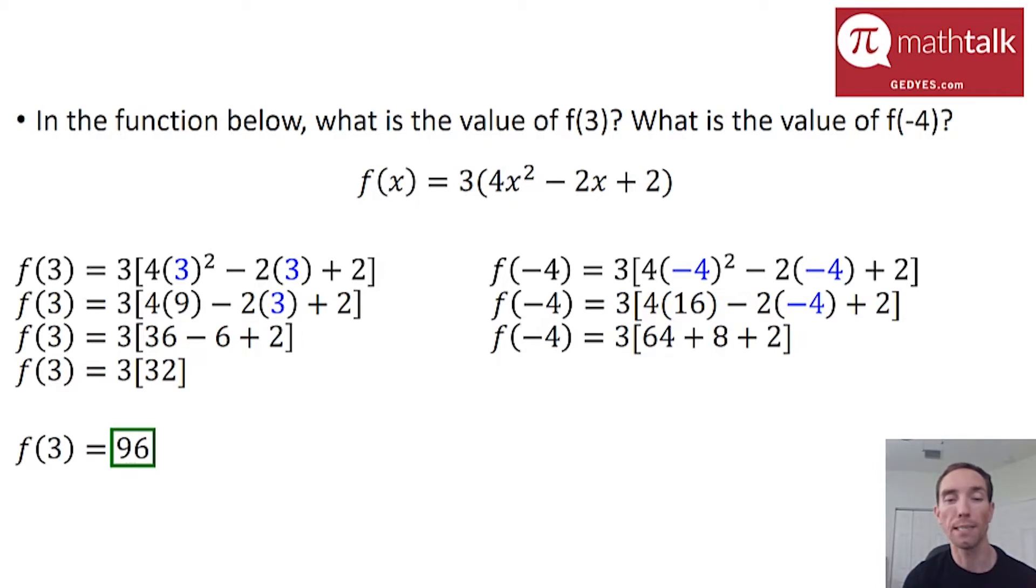So keeping inside the brackets, I'm going to go ahead and add all those numbers together. 64 plus 8 is 72, and 72 plus 2 is 74. And my last step is going to be to multiply 3 times 74, which is going to give me my final answer of 222. So the value of that function, when x is negative 4, is 222.